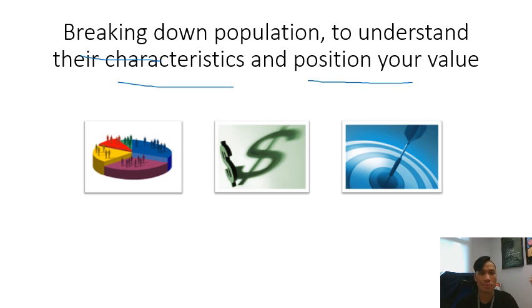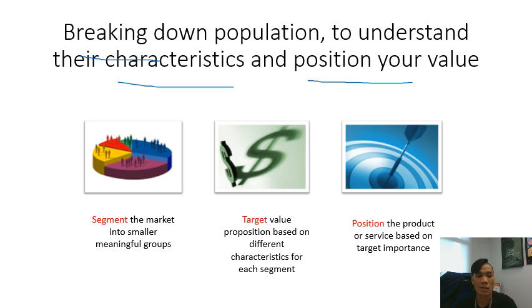STP basically means segmenting the market into smaller meaningful segments. We have a big population, you just want to break it down into smaller meaningful segments. Imagine like a piece of cake, you just want to cut that piece of cake into smaller meaningful segments. Then once you understand these small groups, you have to understand the value or characteristics of these small groups to position your value. Once you understand the targets, you can position your products or service values based on these target importance. It's just like understanding a big group, breaking down into smaller groups, then understanding the characteristics of each group. Once you understand the characteristics, you understand what they value and then you can position your stuff on these values.